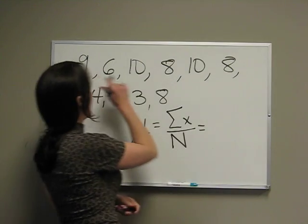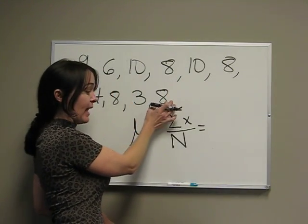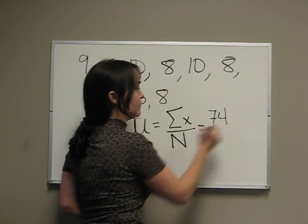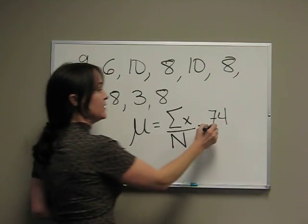If we do this - add 9 plus 6 plus 10, keep adding all the way to 8 - we get 74.